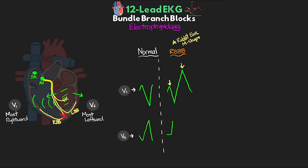Looking at V6, with electrical activity moving away we see a negative S deflection. With right bundle branch block, it's normal to have a T wave going in the opposite direction of the terminal wave of the QRS complex — this is T wave discordance, which is normal in bundle branch blocks. In V1, since the terminal wave is positive, we see a negatively deflected T wave; in V6, since the terminal wave is negative, we see a positive T wave deflection. Importantly, right bundle branch block actually limits our ability to diagnose right ventricular hypertrophy, which will be discussed in a future lesson.